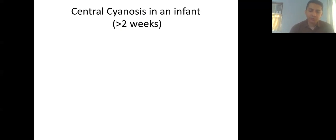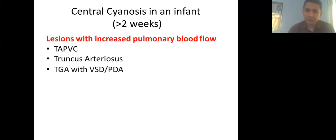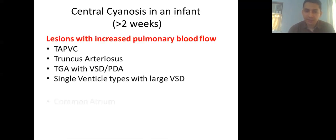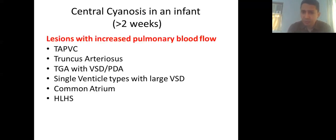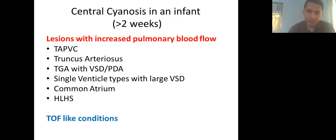Central cyanosis in an infant more than 2 weeks of life: lesions with increased pulmonary blood flow start presenting at this age — TAPVC, truncus arteriosus, TGA with VSD or PDA, single ventricle with large VSDs, common atrium, hypoplastic left heart syndrome (if surviving past 2 weeks), and sometimes TOF-like conditions if infundibular stenosis has progressed sufficiently.